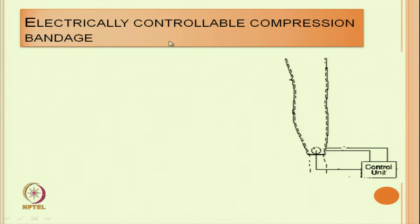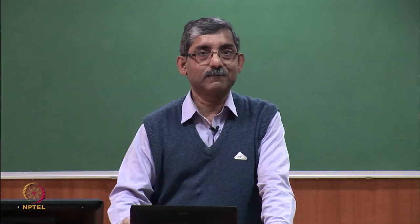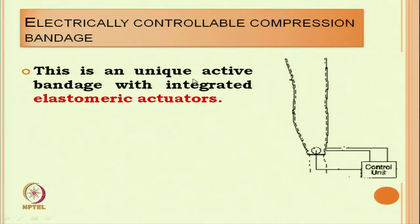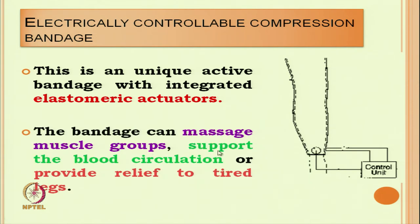Another type is the electrically controlled compression bandage, which changes the compression pressure automatically. This is called an active bandage because it has an integrated elastomeric actuator that will automatically compress and expand. The bandage can massage the muscle group, support blood circulation, or provide relief to tired legs. Automatic massaging is achieved due to the elastomeric actuators.